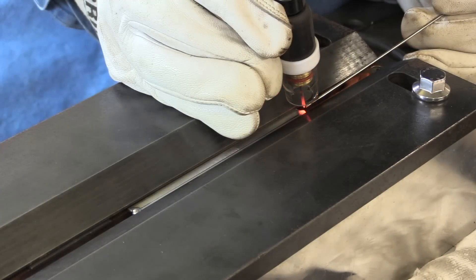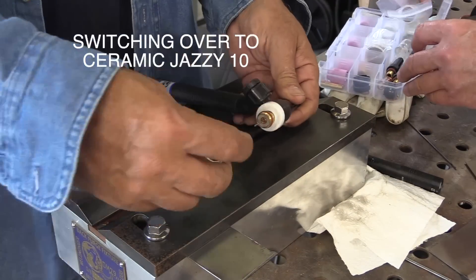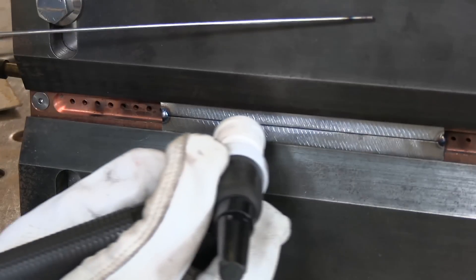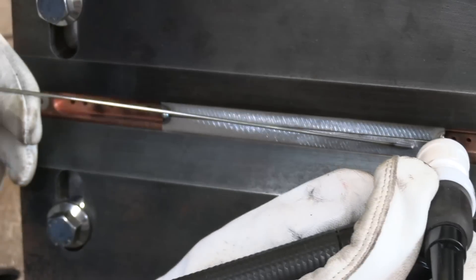And before I set the fixture up on its side for the horizontal position, I'm going to switch over to a Jazzy 10 ceramic cup. Now that the fixture's up in the 2G position, let's light up on it.